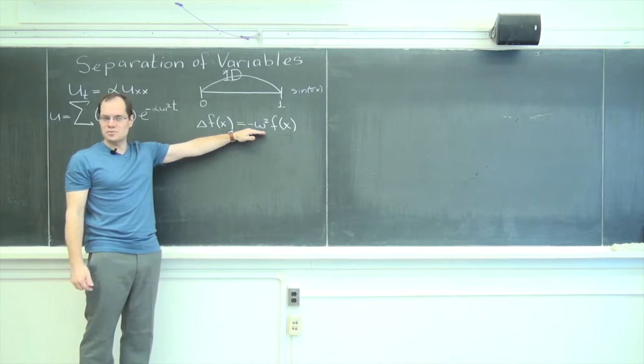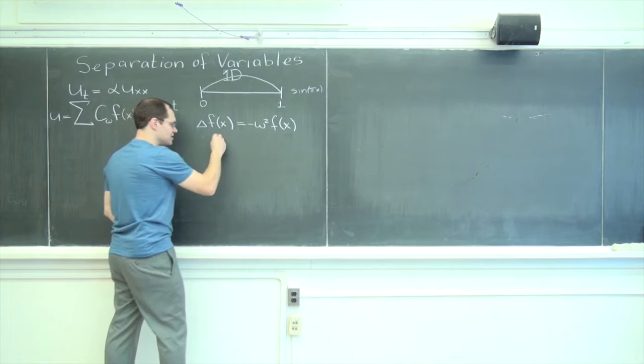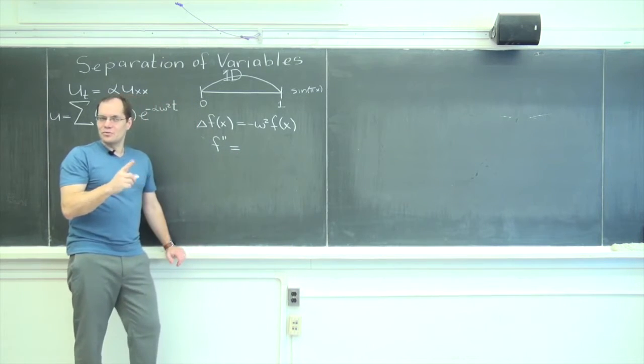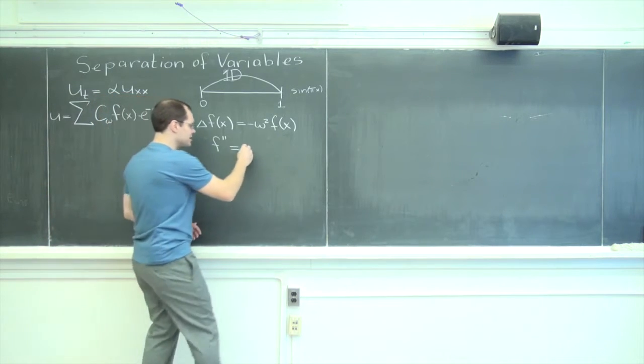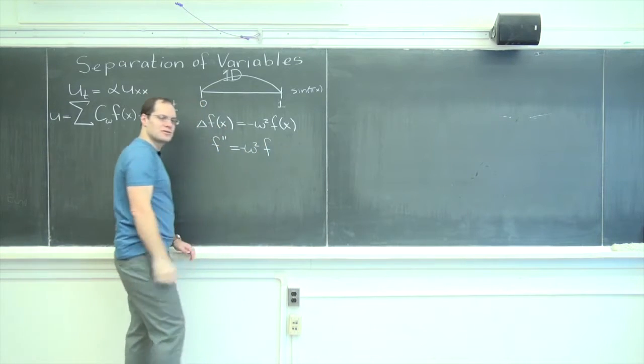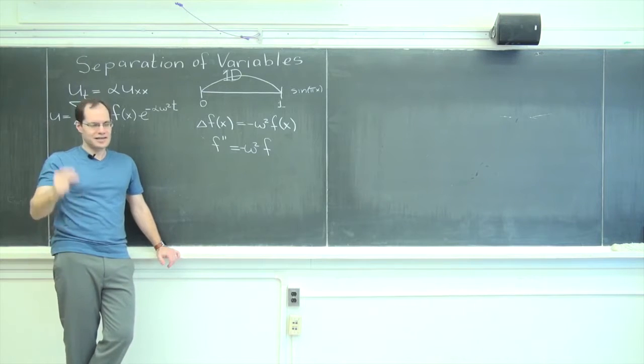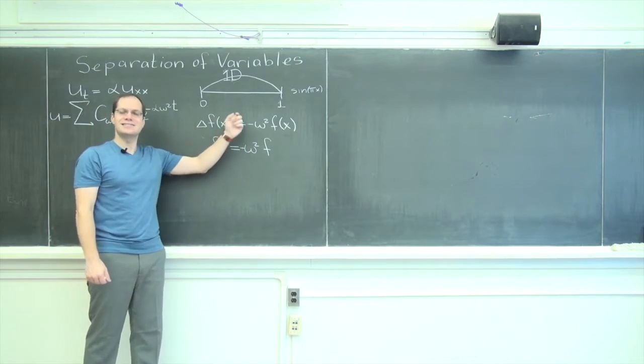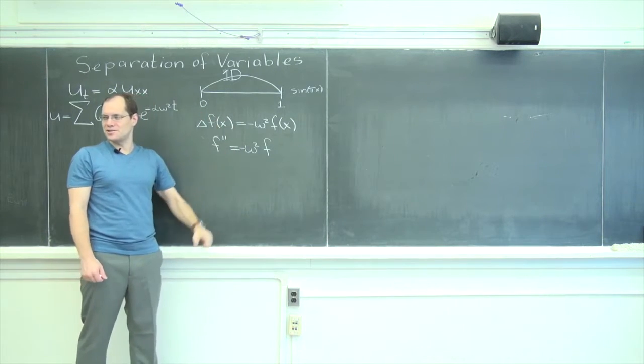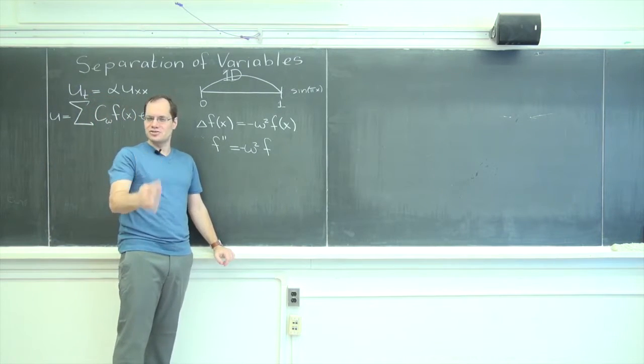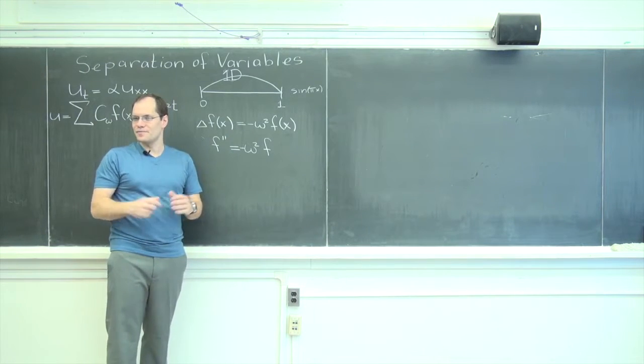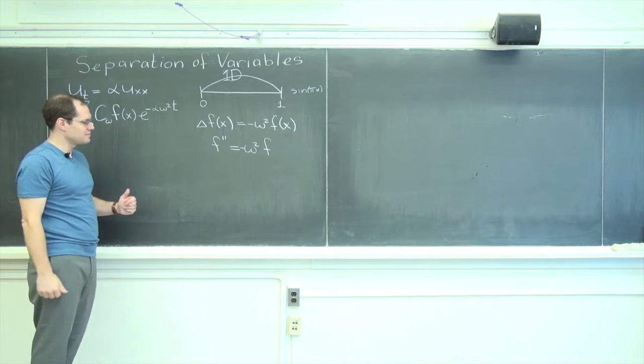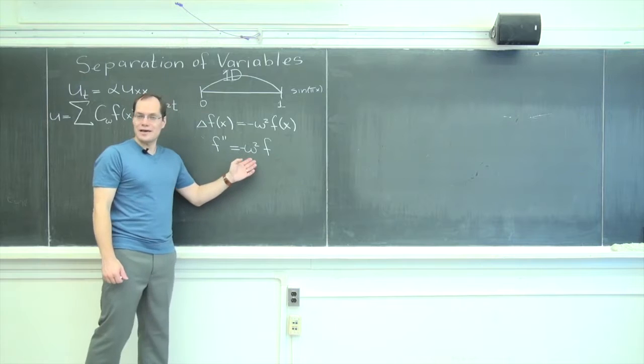So all of this we got from the general case. Now we have a specific case of 1D, specific domain, specific conditions. Let's go ahead and solve this problem. So now we must address this problem. We have the Laplacian of f, which in one dimension is simply the second derivative of f with respect to x, equals, remember the most important thing, we don't know what omega is. If omega was given, then you would say you know exactly what you're looking at. It's just an ODE that you solved before. Give me my initial conditions, I'm done. Now it's a lot more interesting.